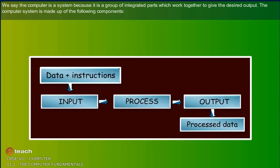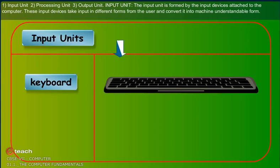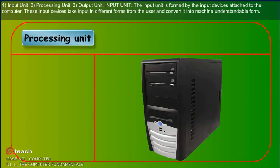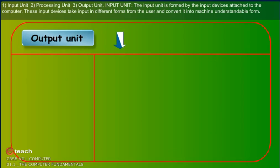We say the computer is a system because it is a group of integrated parts which work together to give the desired output. The computer system is made up of the following components: Input unit, Processing unit, Output unit.